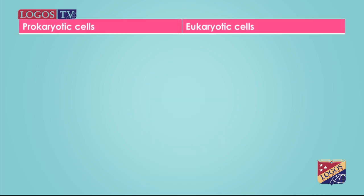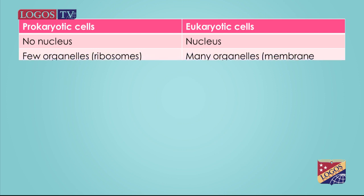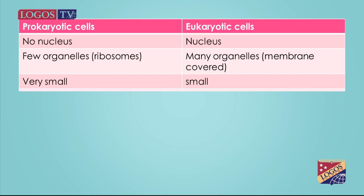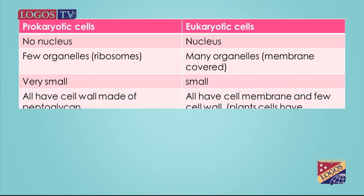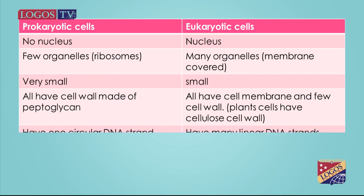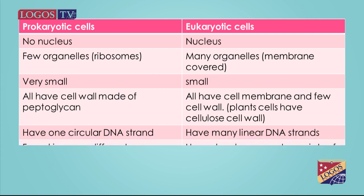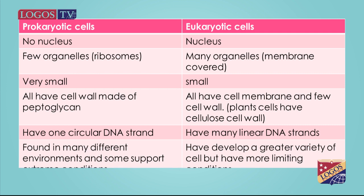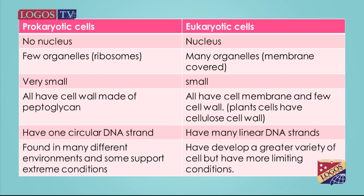Let's make a summary. Prokaryotic cells have no nucleus, while eukaryotic cells have a nucleus. Prokaryotic cells have fewer organelles that are non-membrane-covered, like ribosomes, but eukaryotic cells have many membrane-covered organelles. Usually prokaryotic cells are smaller than eukaryotic cells. Some eukaryotic cells have a cell wall like prokaryotic cells but made of different materials. Prokaryotic cells have one circular strand of DNA spread in the cytoplasm, but eukaryotic cells have many strands of linear DNA enclosed in a nucleus. Prokaryotic cells can survive in many harsh environments where most eukaryotic cells cannot, but eukaryotic cells have developed a greater variety of cell types.